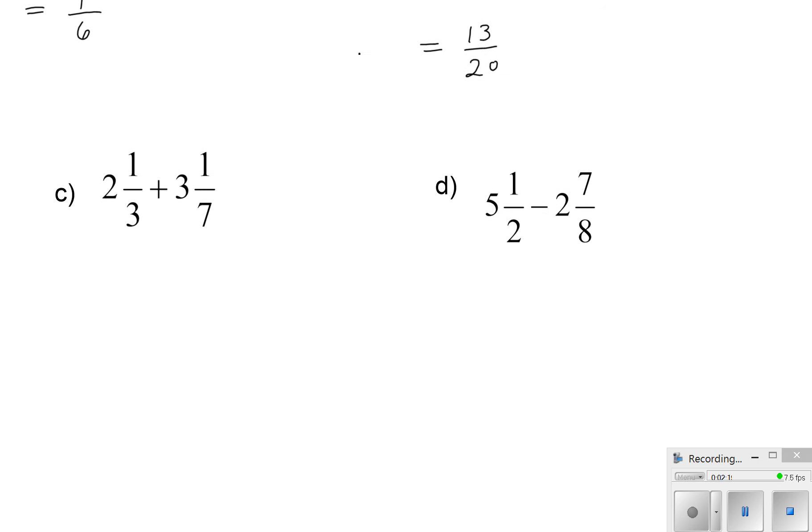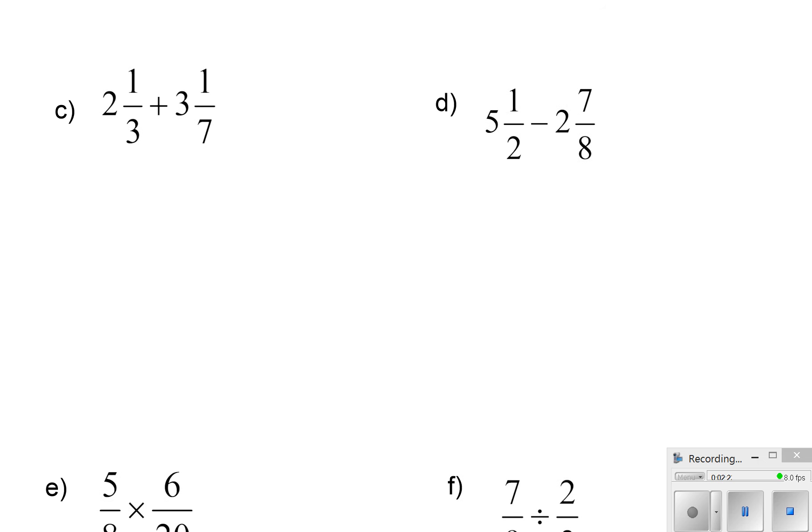The next two are going to be very similar. You still will need to get a common denominator, but they're mixed fractions, and I highly recommend that you change all mixed fractions into improper. It is far easier for you to work with improper fractions. To do that, you take the denominator, you multiply it by the large number, the whole number, and you add the numerator. So 2 times 3 is 6, 6 plus 1 is 7, and then the denominator stays the same. Likewise here, 3 times 7 is 21, plus 1 is 22.